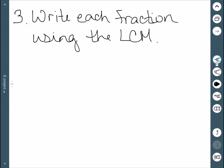The third step is to write each fraction using the least common multiple. We look at the denominator and see what's missing to make it look like the LCM, then multiply both the top and bottom by that term.